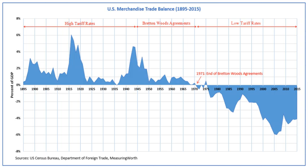Setting up a system of rules, institutions, and procedures to regulate the international monetary system, these accords established the International Monetary Fund and the International Bank for Reconstruction and Development, which today is part of the World Bank Group. The United States, which controlled two-thirds of the world's gold, insisted that the Bretton Woods system rest on both gold and the U.S. dollar.